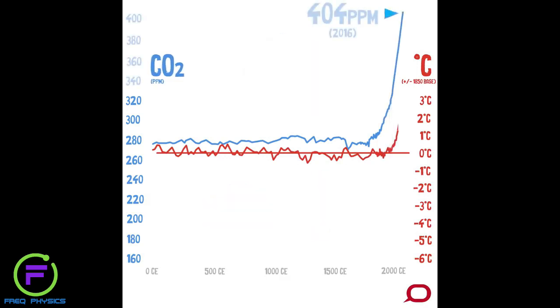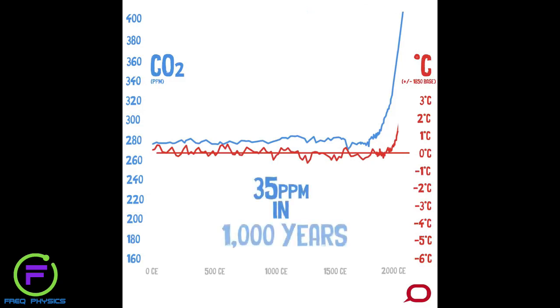Here's where we are now. When the Earth warmed out of the last ice age, CO2 levels naturally increased by 35 parts per million over 1,000 years.